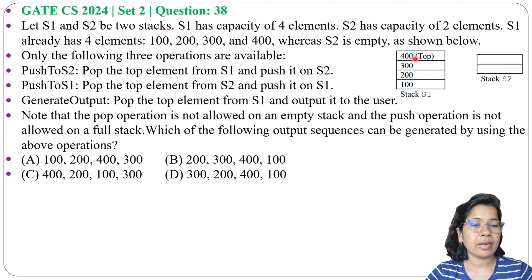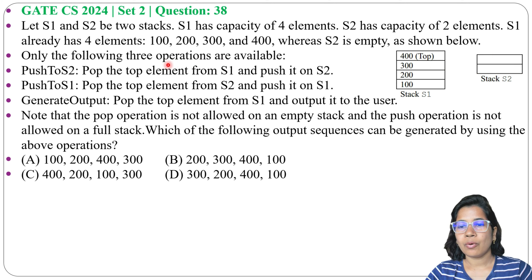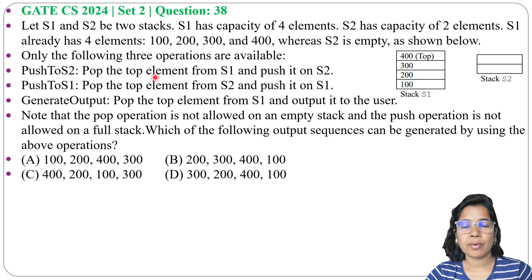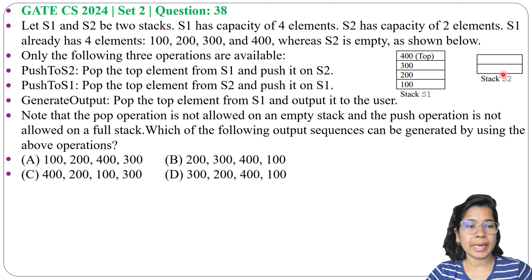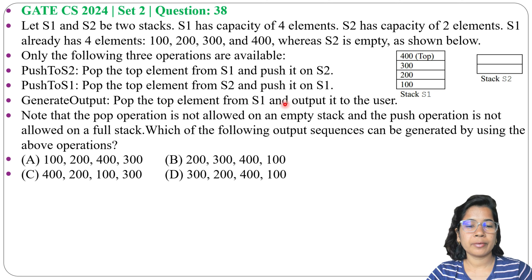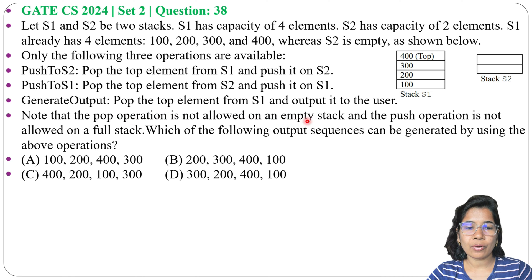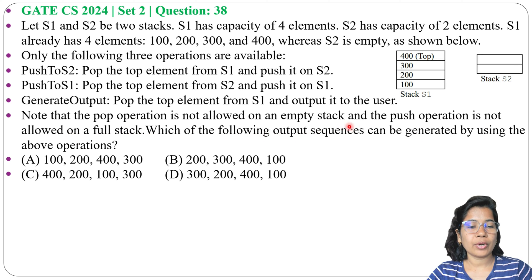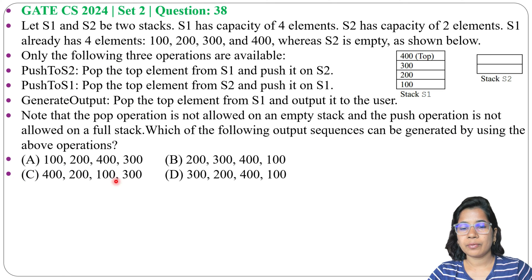Only the following three operations are available. First, push to S2: pop the top element from S1 and push it onto S2. Second, push to S1: pop the top element from S2 and push it onto S1. Third, generate output: pop the top element from S1 and output it to the user. Note that the pop operation is not allowed on an empty stack and the push operation is not allowed on a full stack.